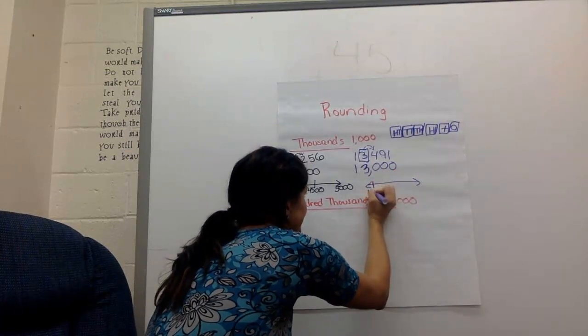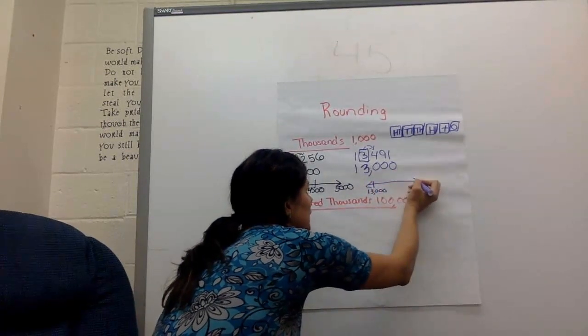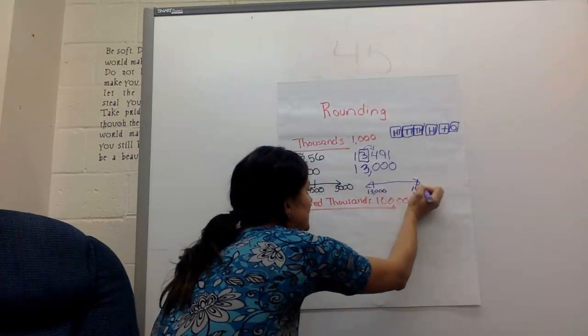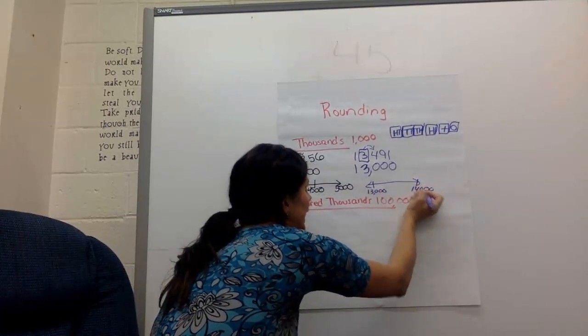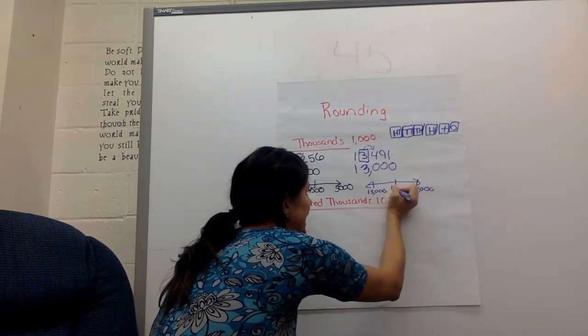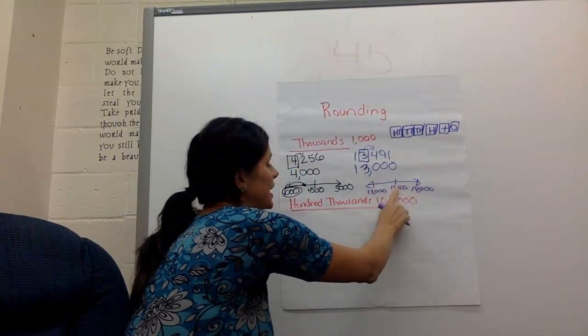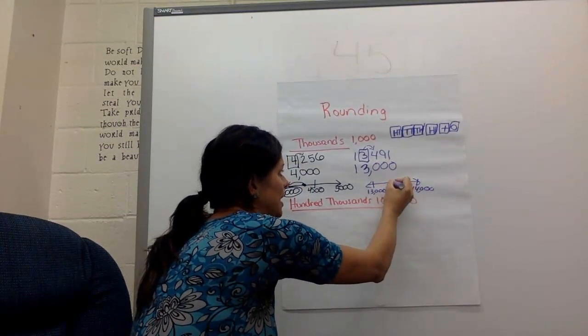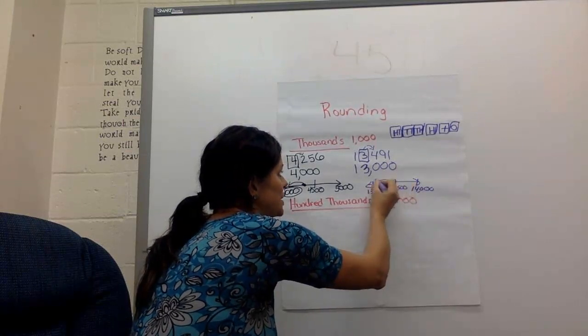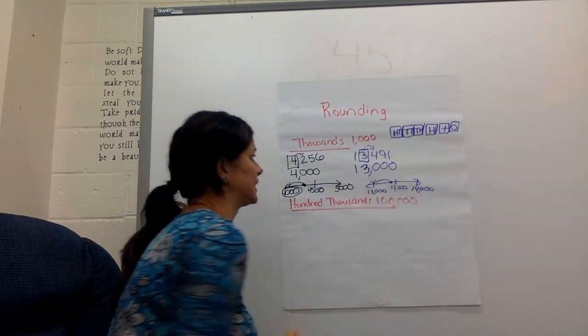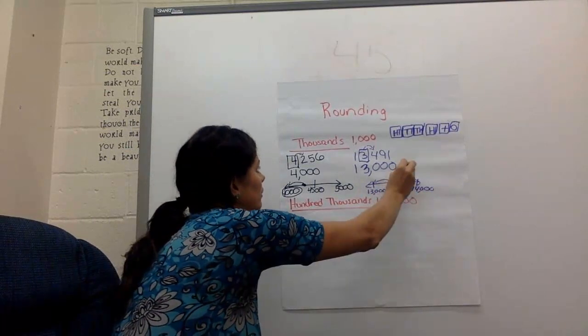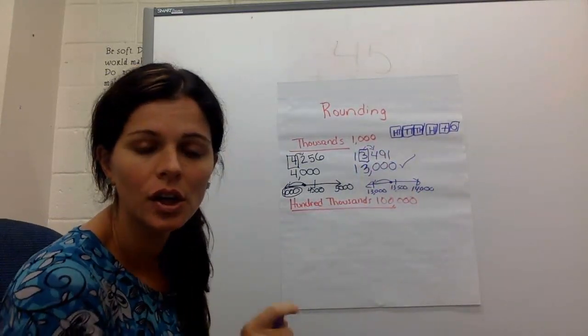I'm going to check with my number line to make sure I'm right. Here's 13,000, here's 14,000. In the middle is 13,500. 491 is less than 500, so it's closer to 13,000 than it is 14,000. So we are right.